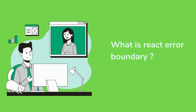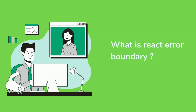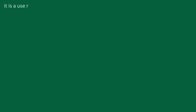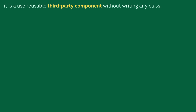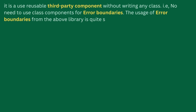What is React Error Boundary and how to use it in React? Error Boundaries is a feature for catching JavaScript errors in child component trees, and can only be implemented using class components. However, it is available as a reusable third-party component without writing any class, so you do not need to use class components for error boundaries. The usage of error boundaries from this library is quite straightforward.